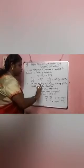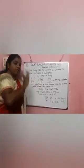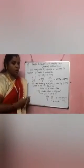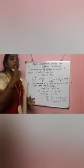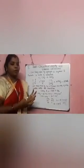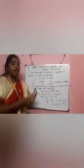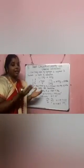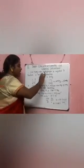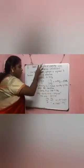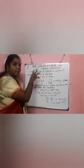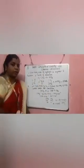Now we are able to understand. In this topic we discussed stoichiometry — which deals with quantitative relationships, meaning the number of molecules and moles, and always works with balanced equations. These are the examples and the kinds of numerical problems that will arise.